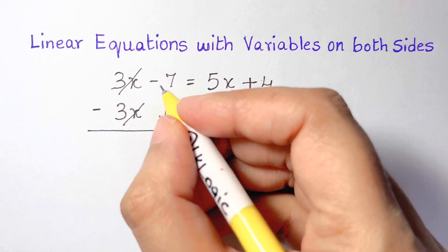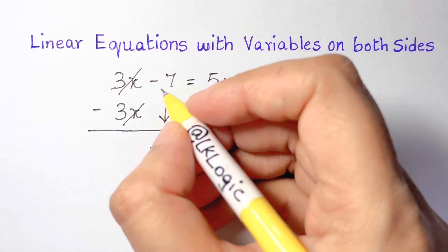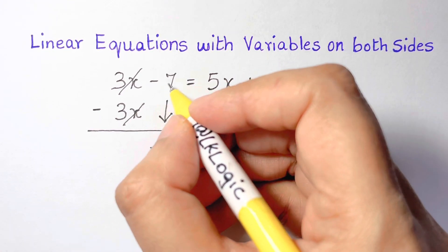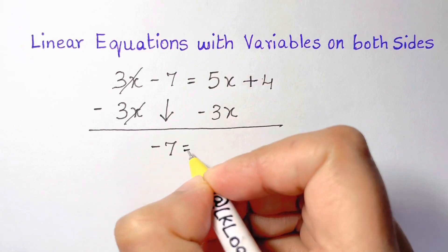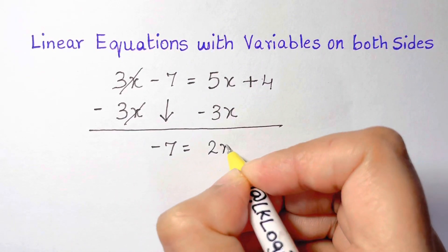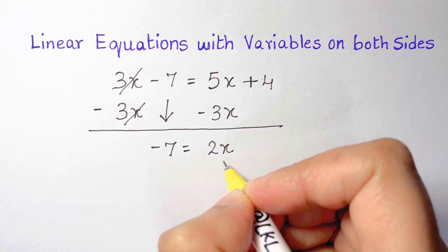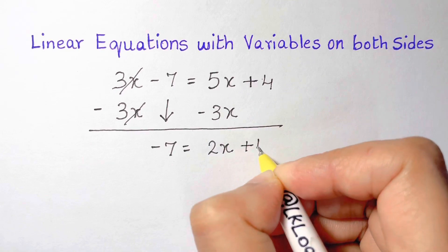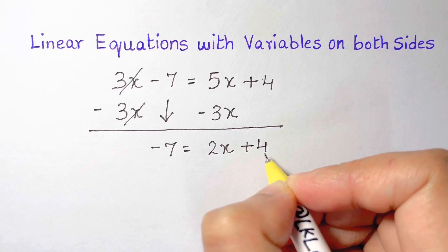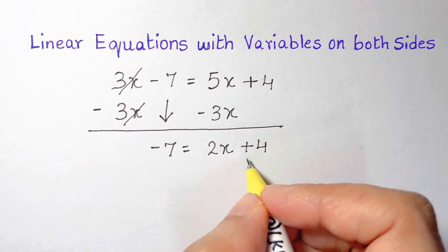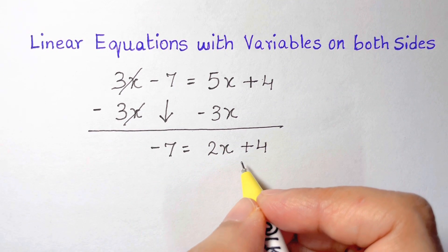It's really important to always bring down the sign that comes before the number — I call it the leash. Bring down your equal sign. 5x minus 3x equals 2x, and bring down the plus 4. Now that the variables are on one side, we move to the next steps.